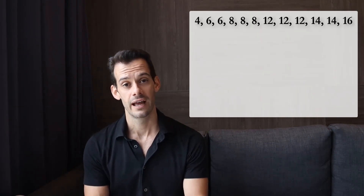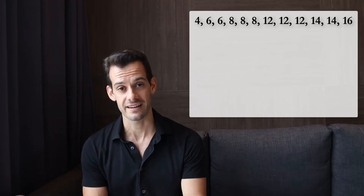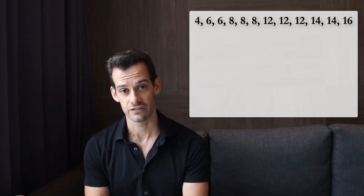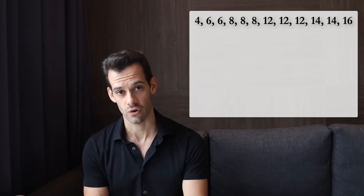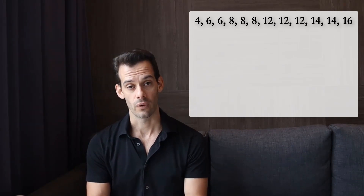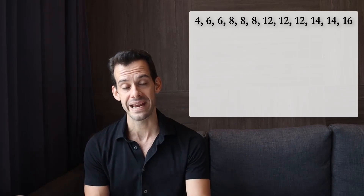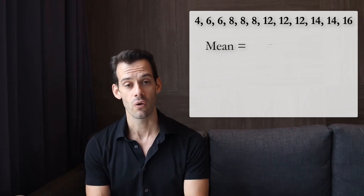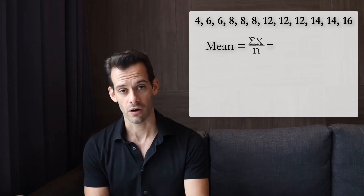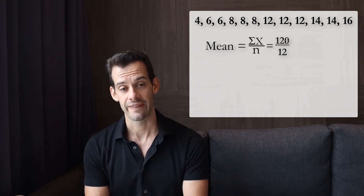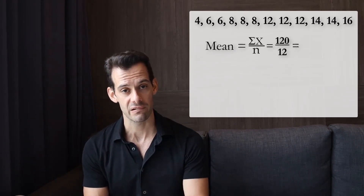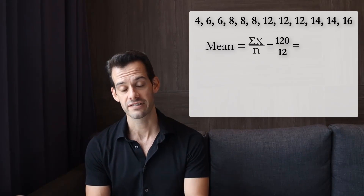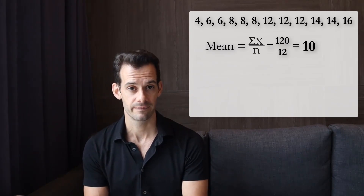Now in order to do this we're going to look at a sample of 12 scores and we'll practice each of these calculations using this set of scores. The first thing we need to do is know the mean, which we get by adding up all our scores and dividing by the number of scores. This gives us a mean of 10.